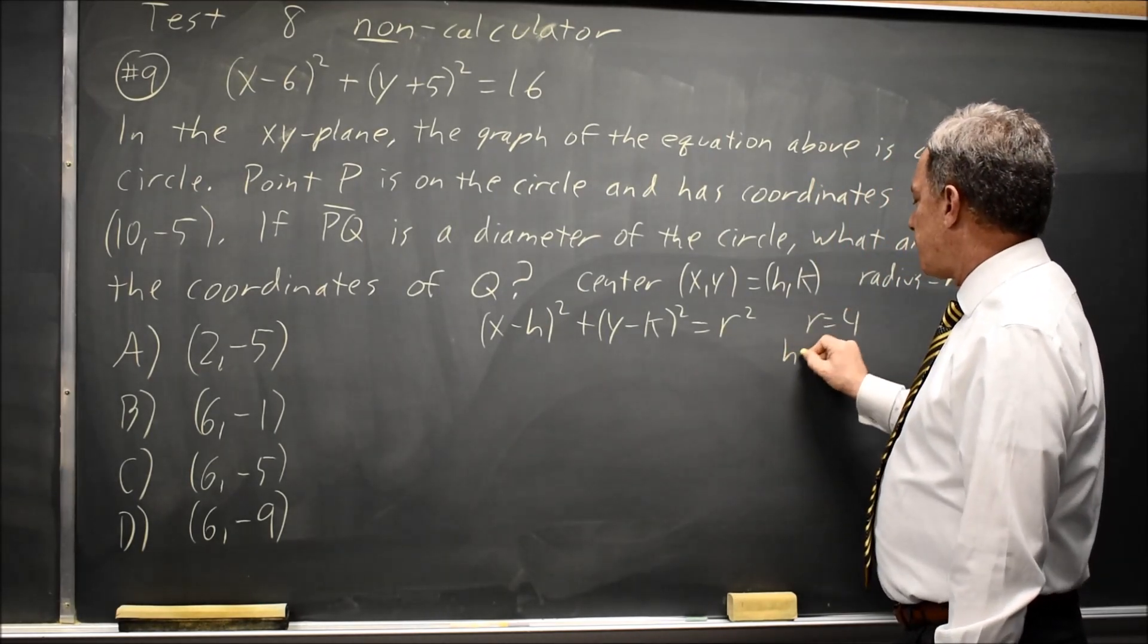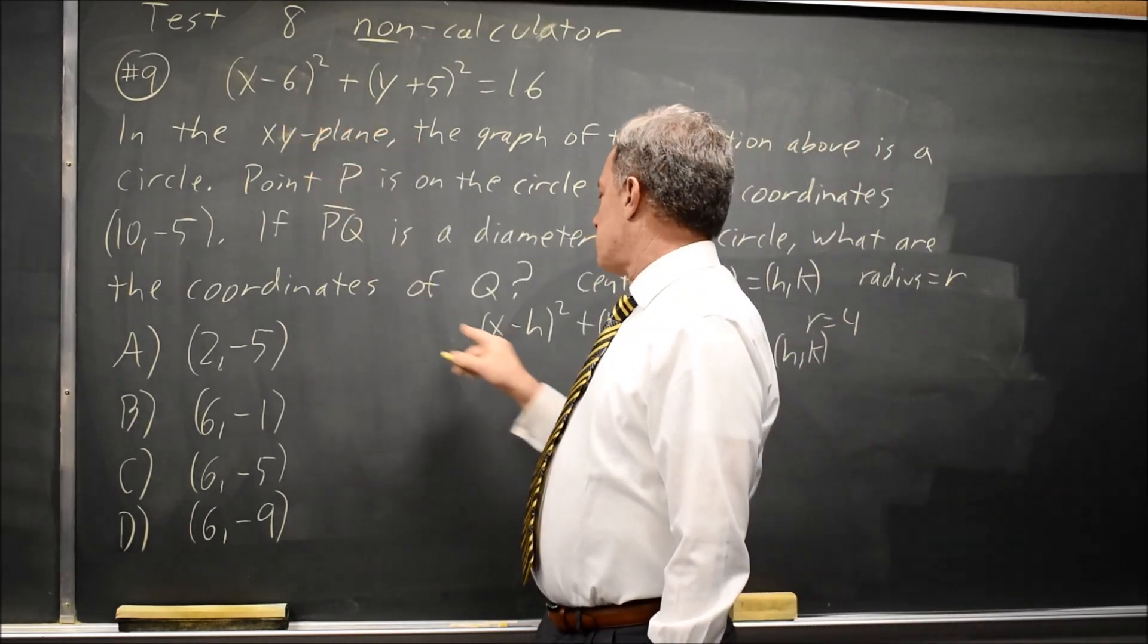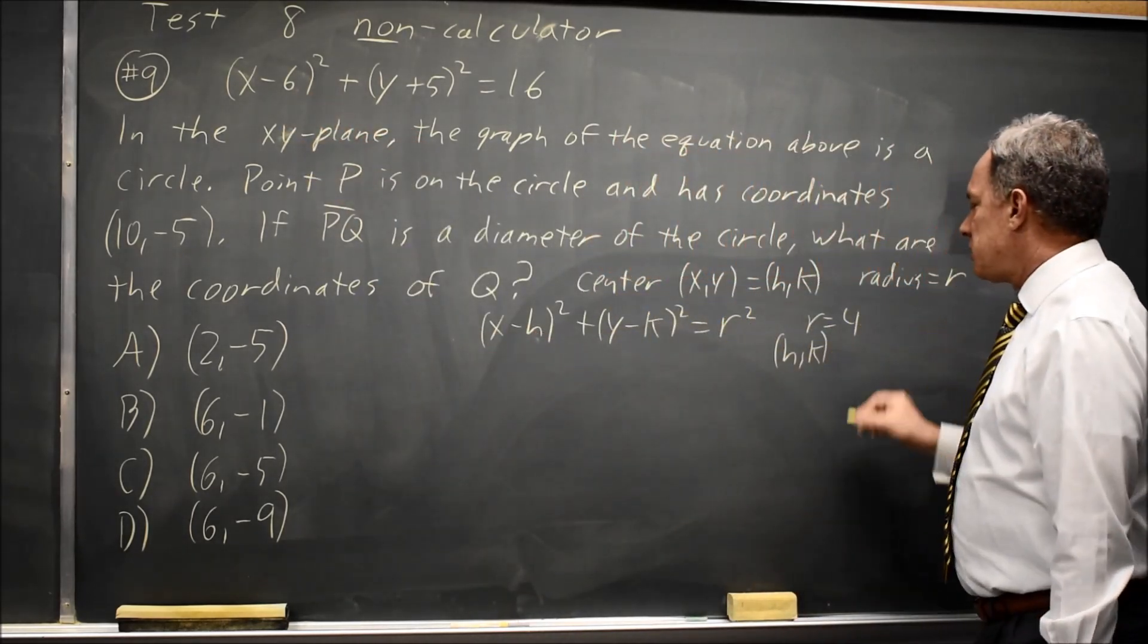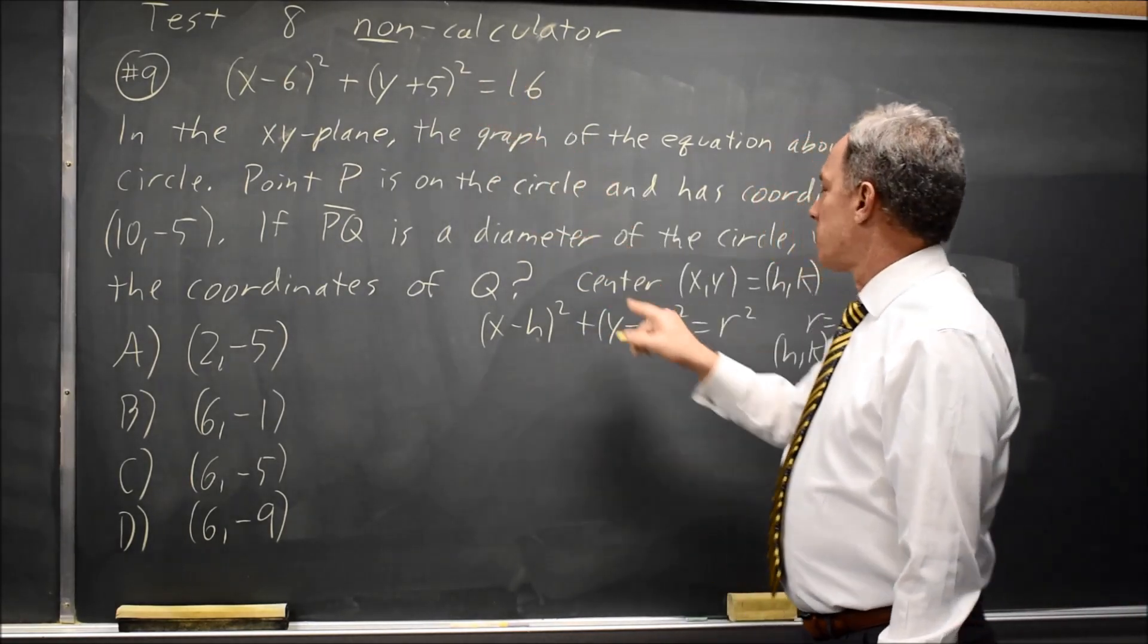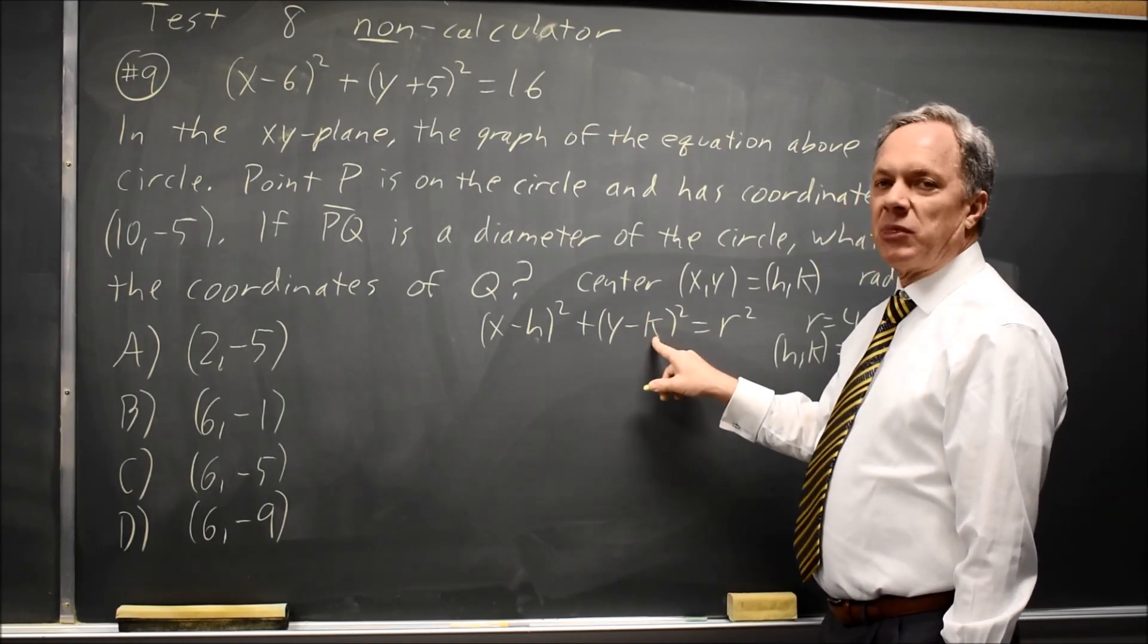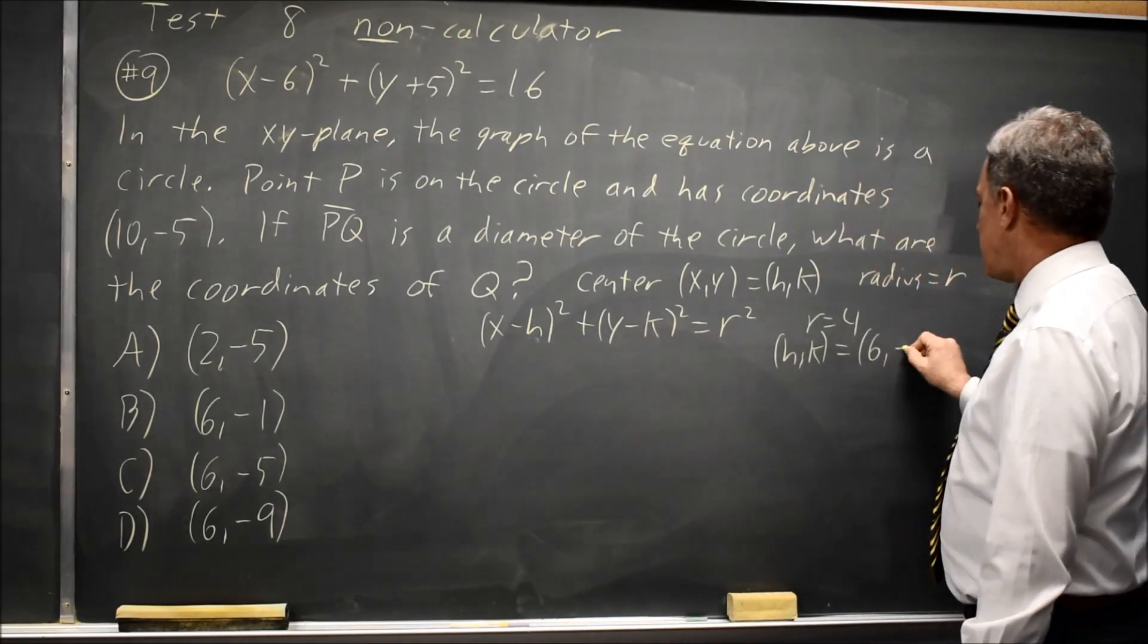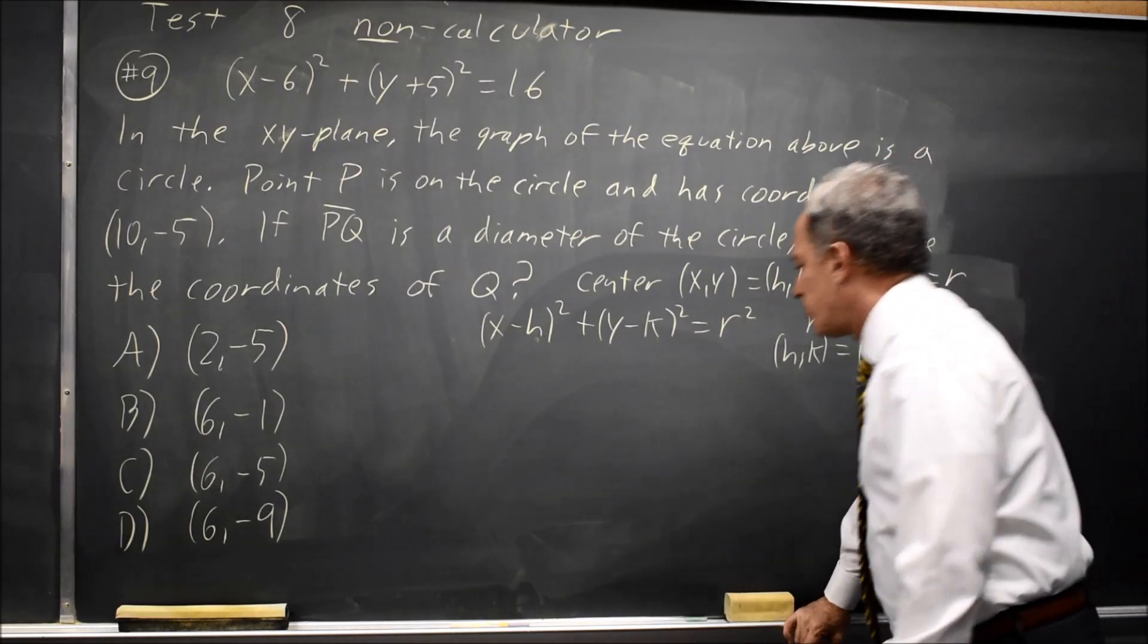We also have H,K because X minus 6 equals X minus H. So H, the X coordinate, is 6. And Y plus 5 equals Y minus K. So this has to be Y minus negative 5. K is negative 5. The center of the circle is at XY equals (6, -5).